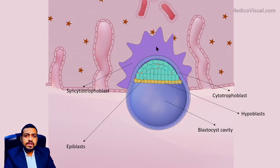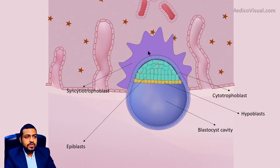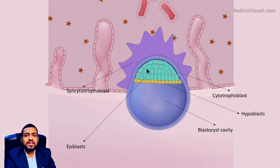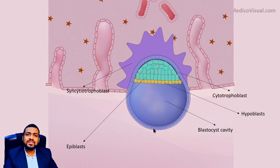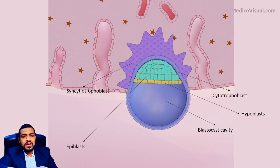On the dorsal side, the epiblasts are lying. What the hypoblast will do is proliferate and line the blastocyst cavity. They will personalize this blastocyst cavity by decorating its wall with their own cells — the hypoblast cells will customize this cavity.